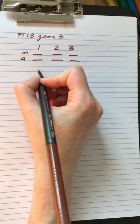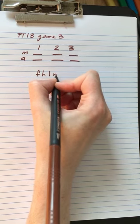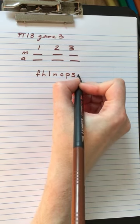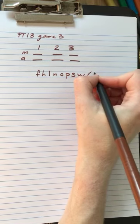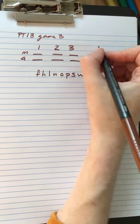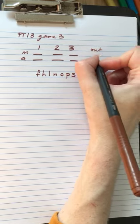So the eight that we have to choose from are F, H, L, N, O, P, S, and W. Eight there, but we're only choosing six of them so there are going to be two out.